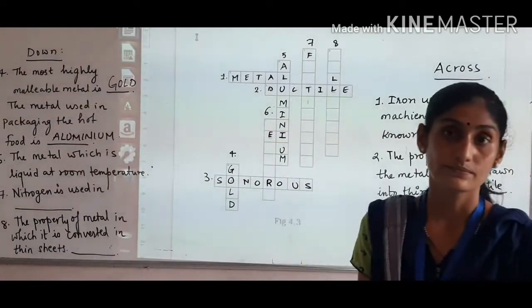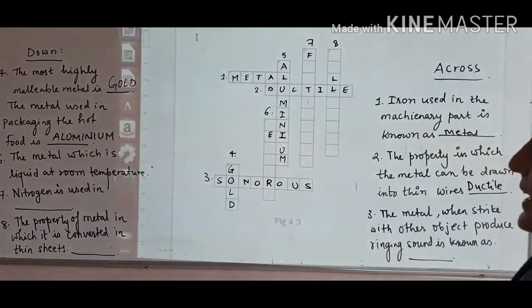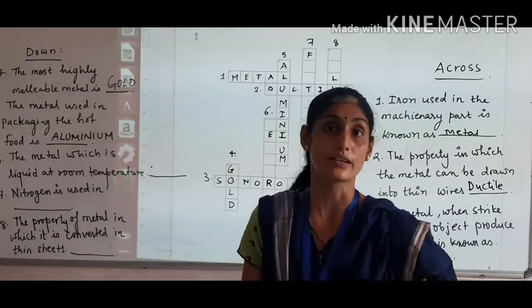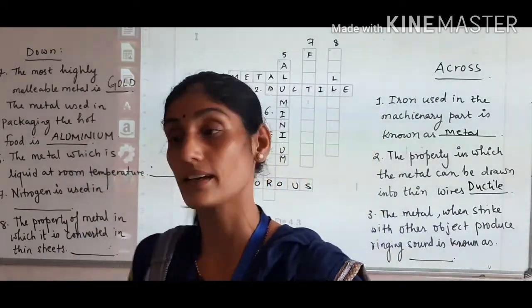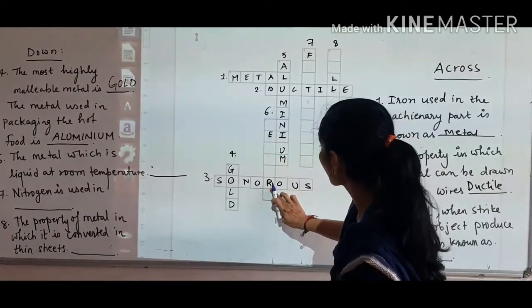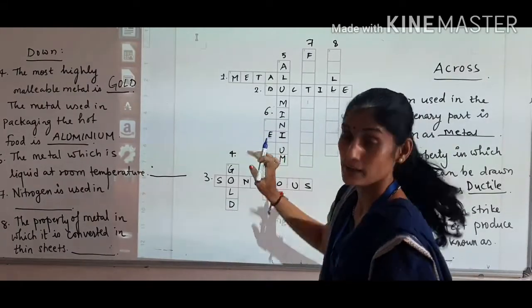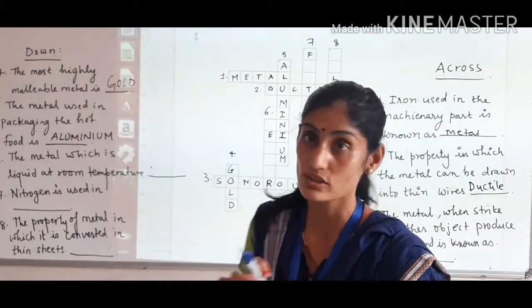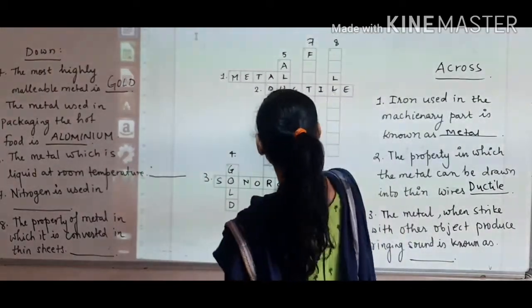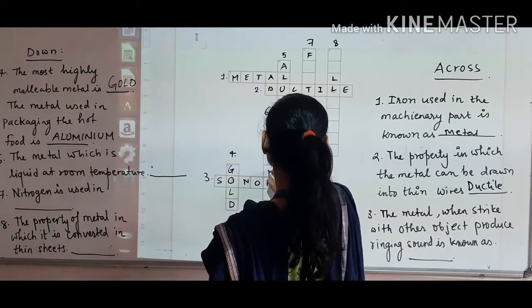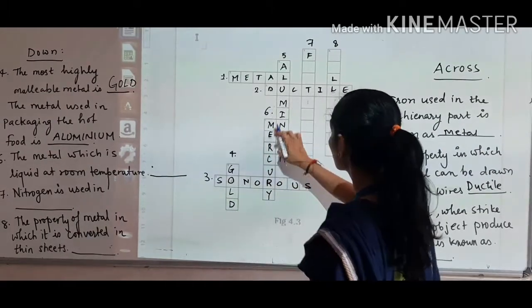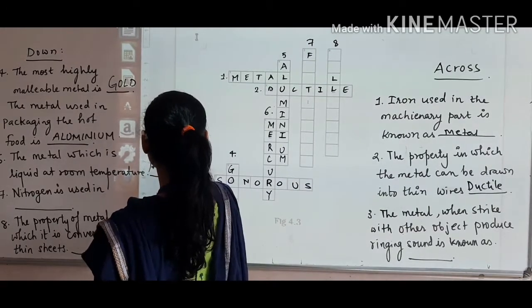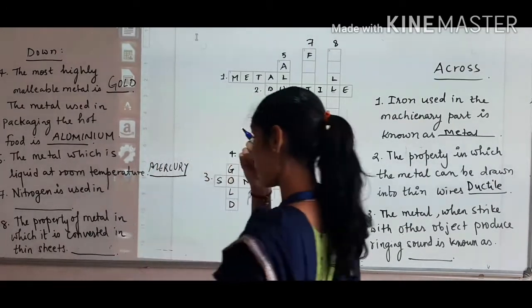Sixth question: the metal which is liquid at room temperature. Children, there is a metal which remains liquid, not solid at room temperature. If you look at the letters, the answer is that metal is mercury. The metal which is liquid at room temperature is mercury.